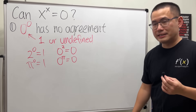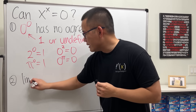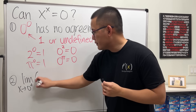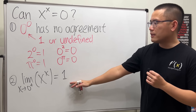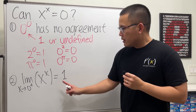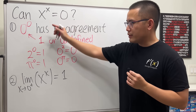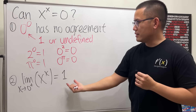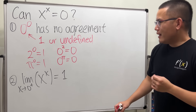Some people would like to use limits. If we take the limit as x approaches zero from the right of x to the x power, that is equal to one — I have a video on this. But the thing is, this is an equation, not a limit, so this does not help. And in fact the limit gives one, not zero.